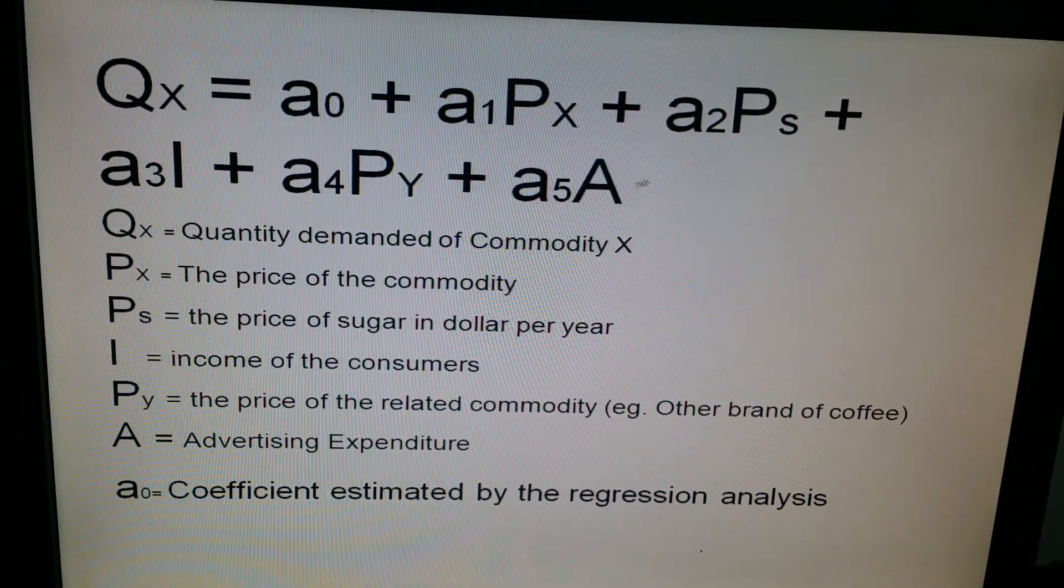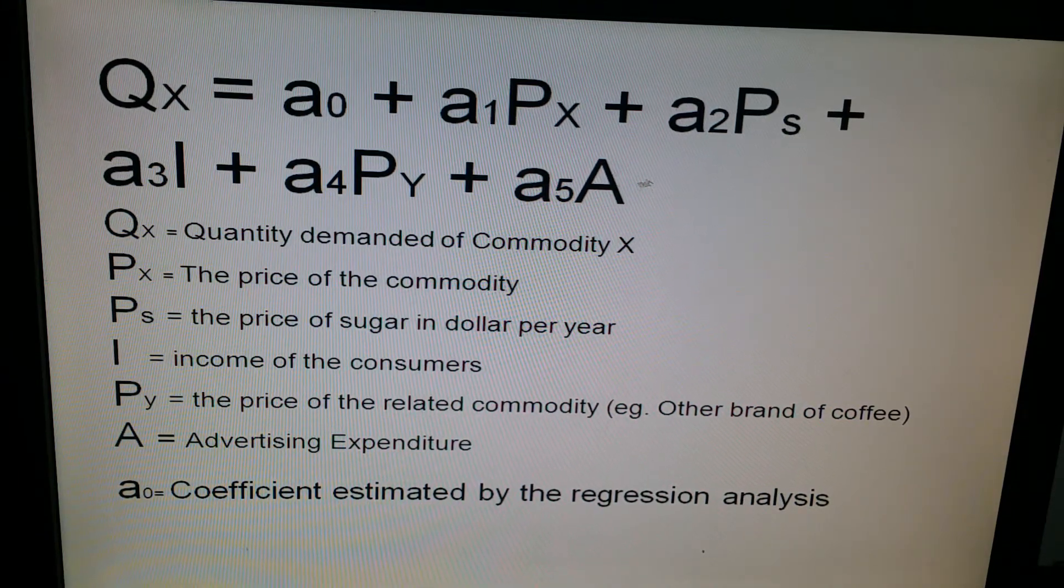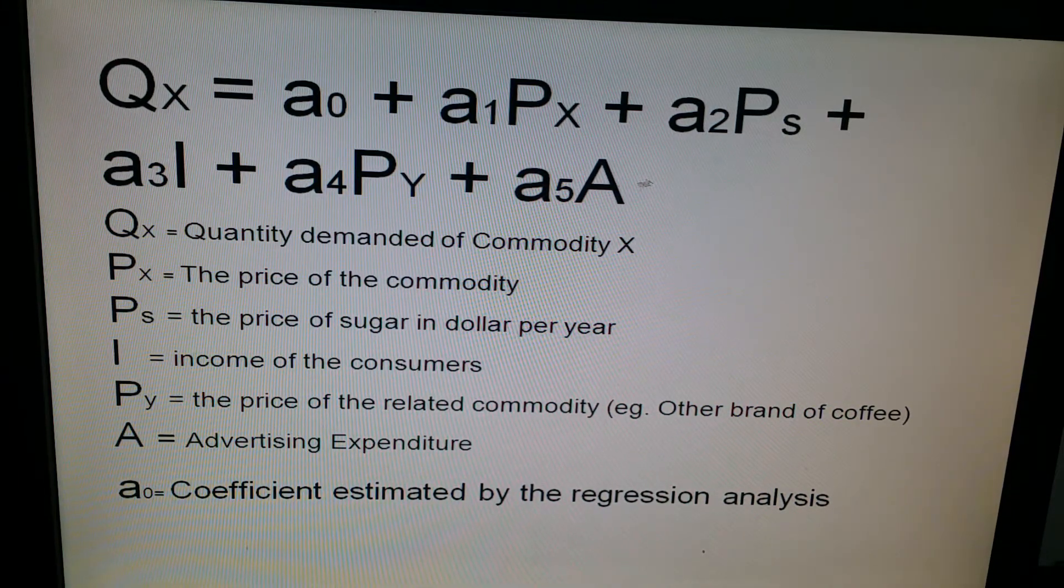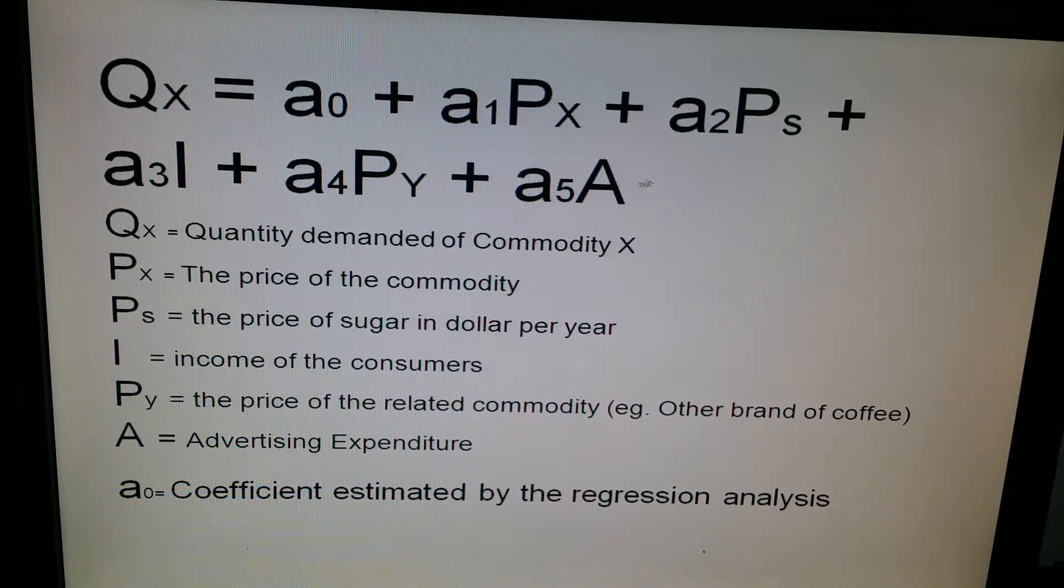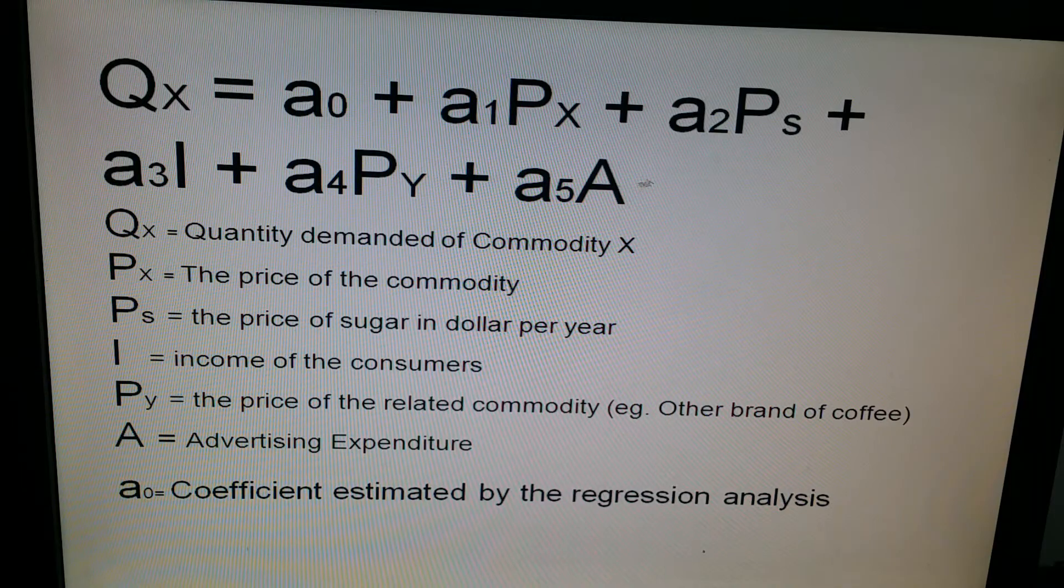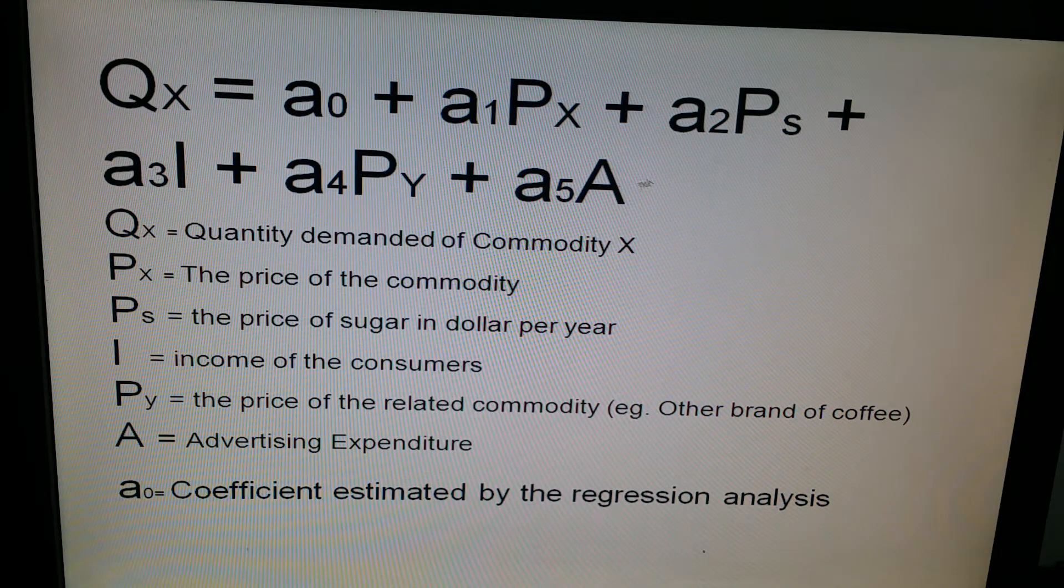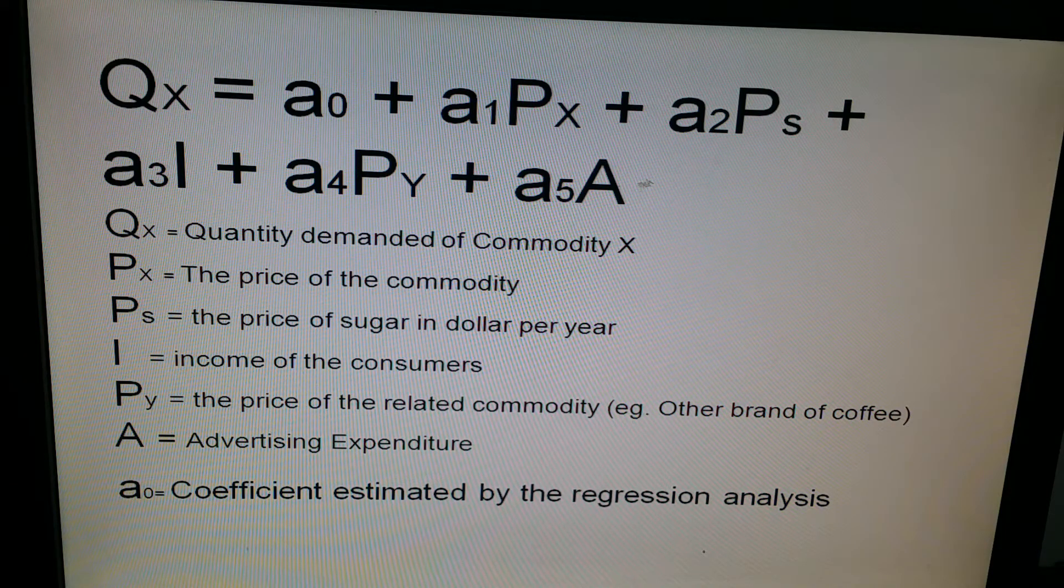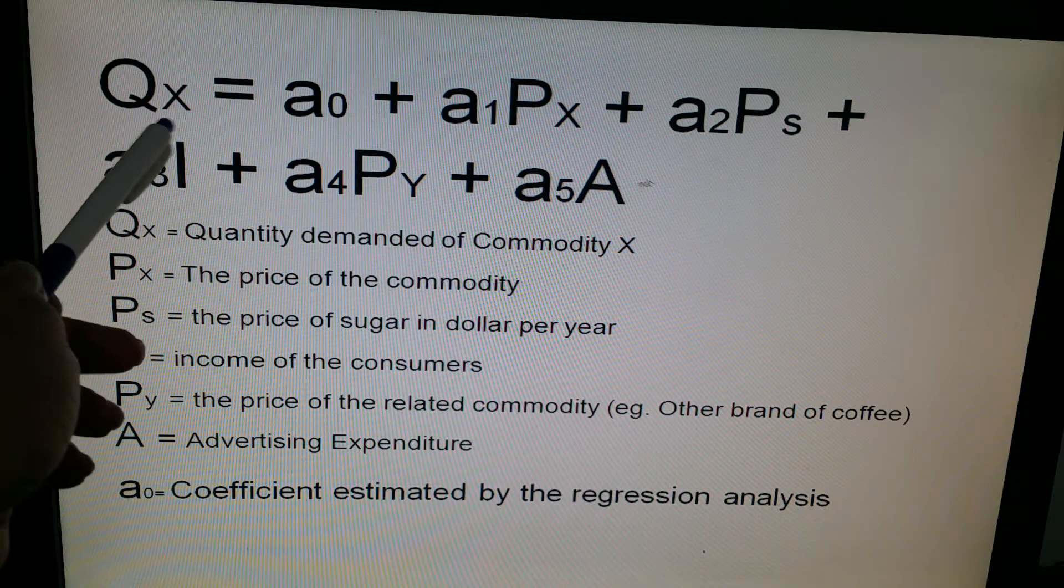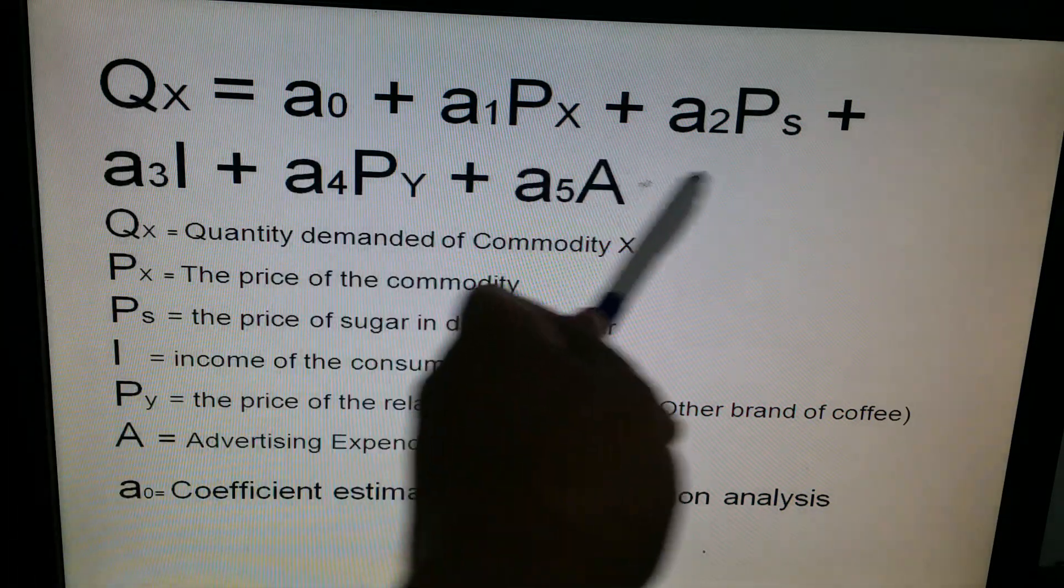Okay, so now right in front of you there is an equation, and this equation very succinctly and accurately captures the relationship that we are trying to prove. We are trying to prove that the quantity demanded of any product, or of this hypothetical product, let's say product X, the quantity demanded of X depends on the factors that we had highlighted in the last video.